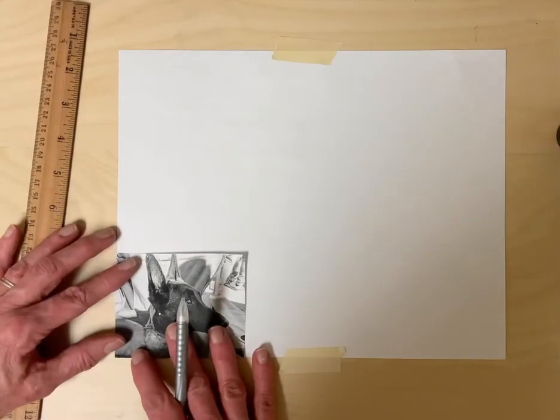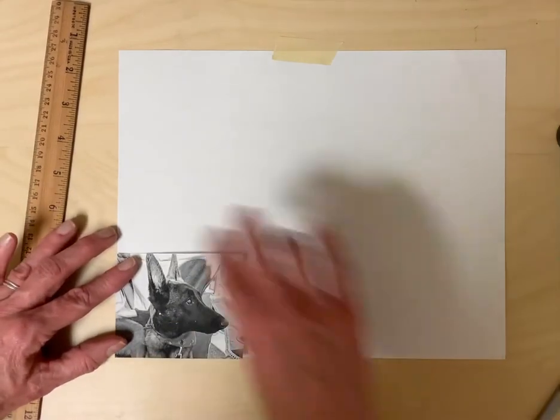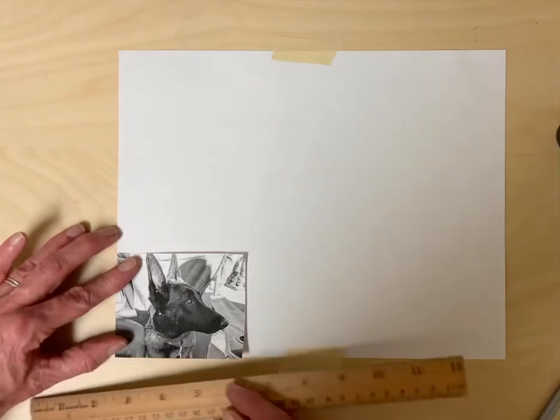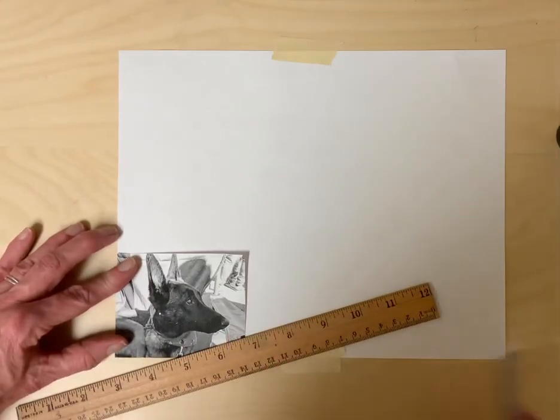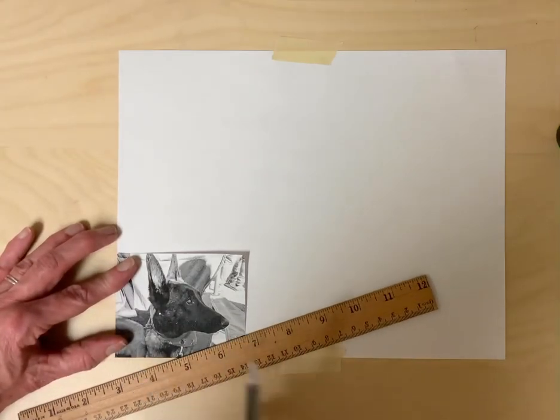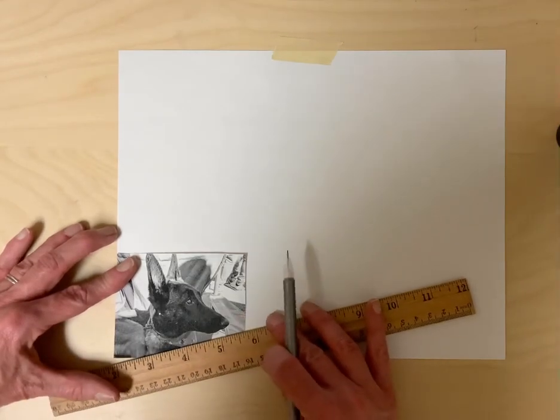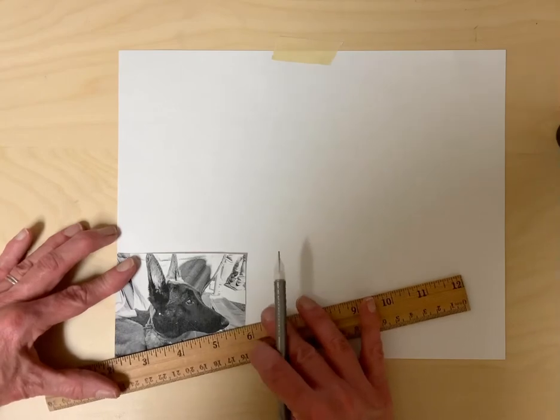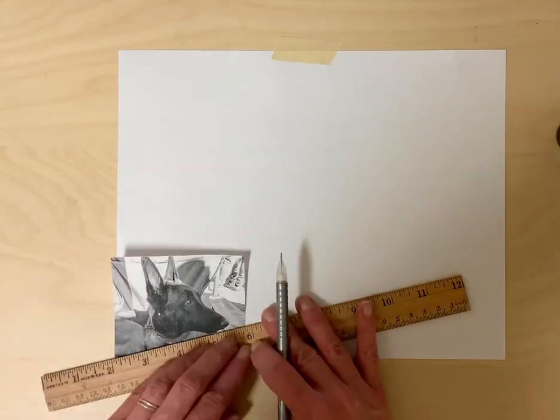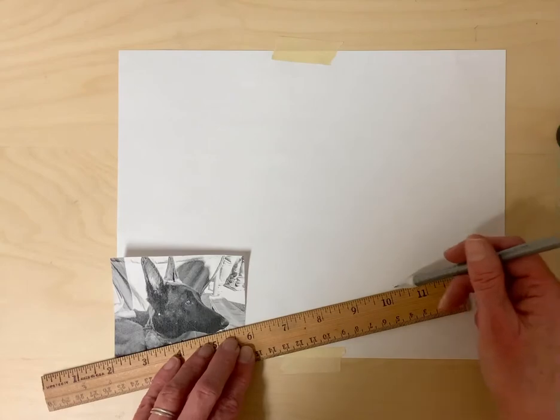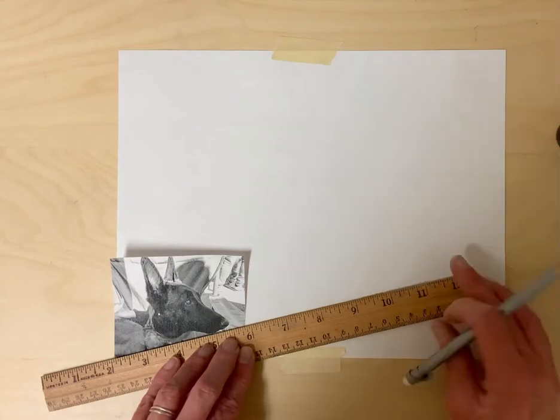So again I'm going to line it up in the corner just like this. I'm going to take my ruler, run it through the corner of my photo and right there at that point. Then I'm just going to make a line kind of where I think it is, that general area.